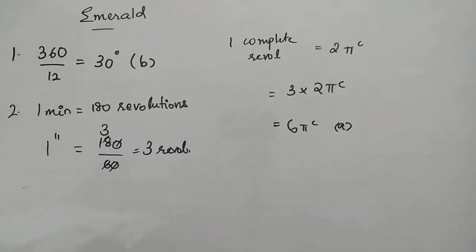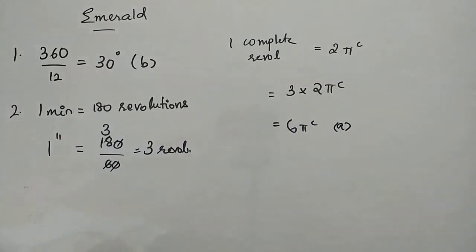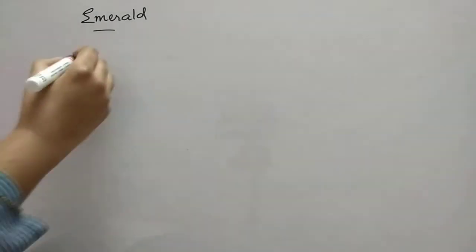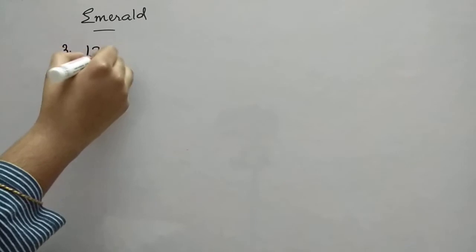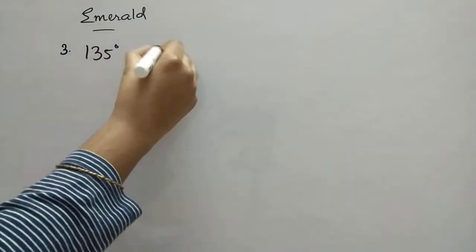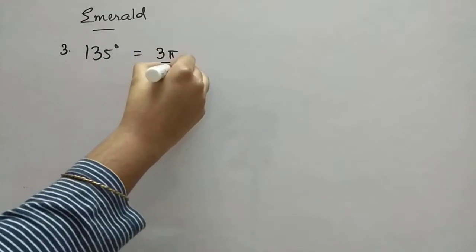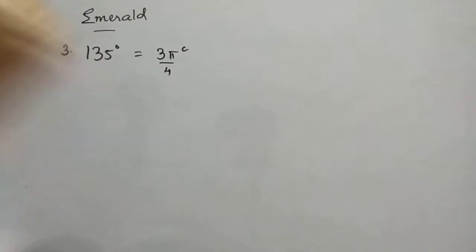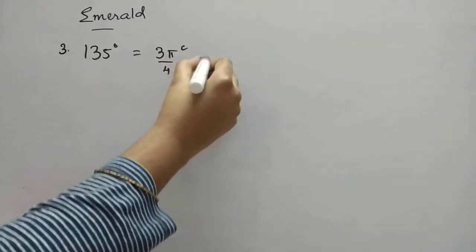Now we will see third question. Before that we have passage questions. Third question, it is 135 degrees. So we have to convert that into radians. That is option B, 3 pi by 4. Unit is radians.